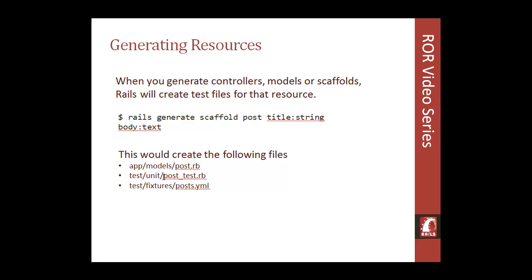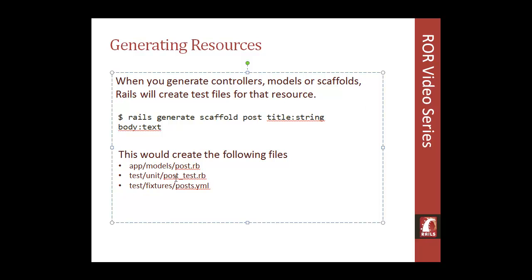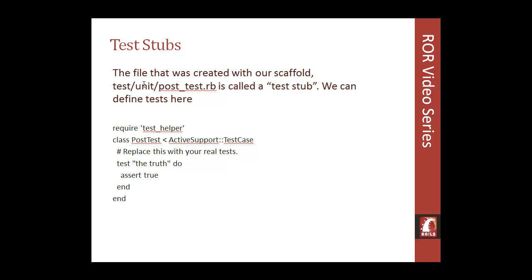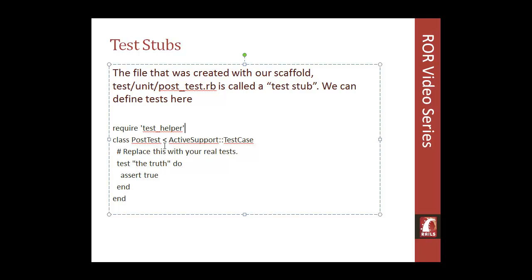When generating resources — controllers, models, or scaffolds — Rails will create test files for you automatically. For the stuff we've already created, we already have unit test files and fixtures for posts. Unit tests deal with models and functional tests deal with controllers. We're actually going to use the scaffold command again in the second part of this section. The post_test.rb file in the test/unit folder is called a test stub — this is where we define our tests.